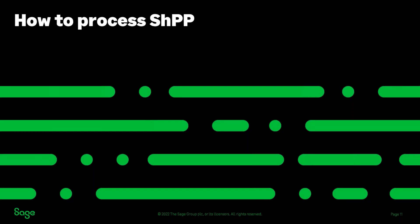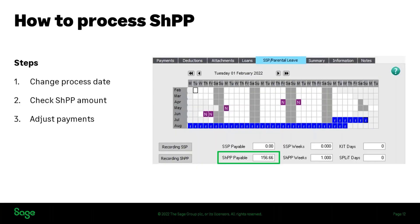With that set up, how does it fit into your payroll process? This is very similar to any other statutory payment. To summarize: first, set your process date — the date your employees are paid — and all statutory payments will calculate up to that process date. Then check the shared parental pay amount on the SSP/parental leave tab. The third step is to make any adjustments to other payments — you might make up to basic if you have a company scheme providing full pay during this period of leave, or manually reduce the payment so the employee is only paid for the days they've worked.